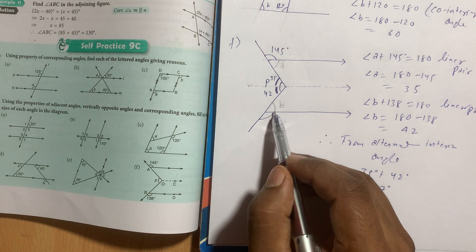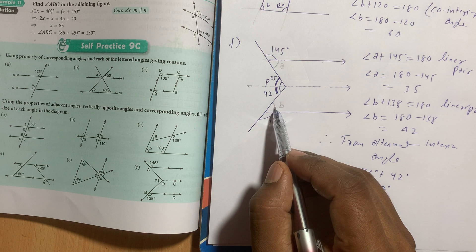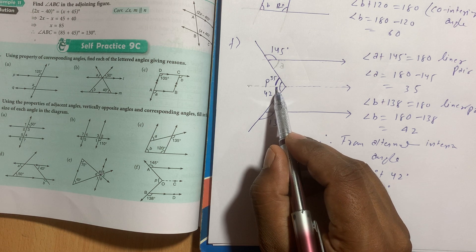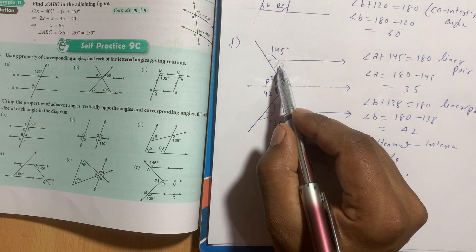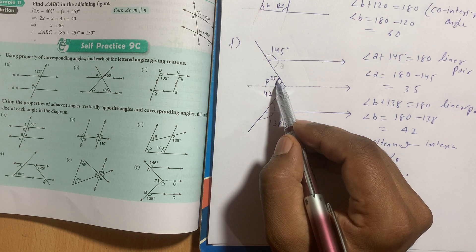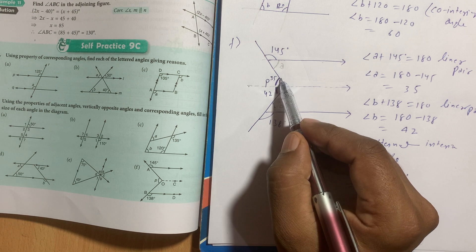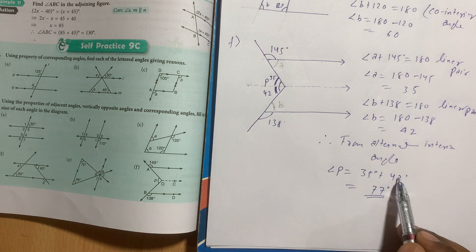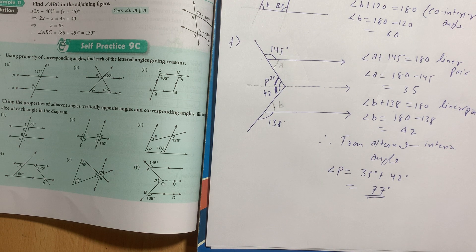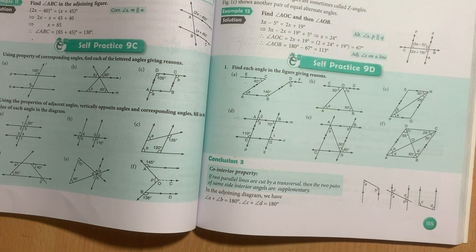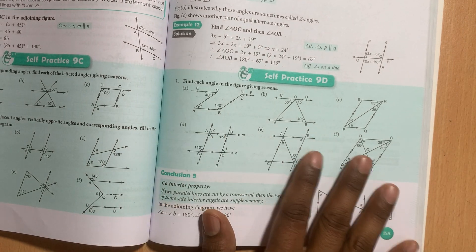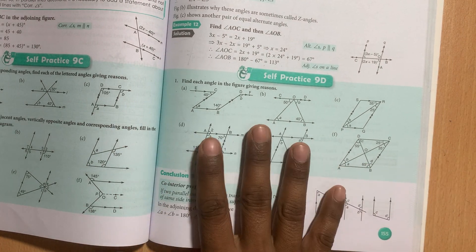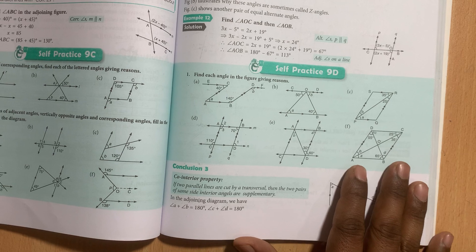First I used the alternate interior angle concept to find angle B, then the linear pair to find angle A and angle B. Using those values I found angle P. I have covered self practice 9C and you can use all the concepts to solve the whole exercise. I will give you a homework. Thank you very much.